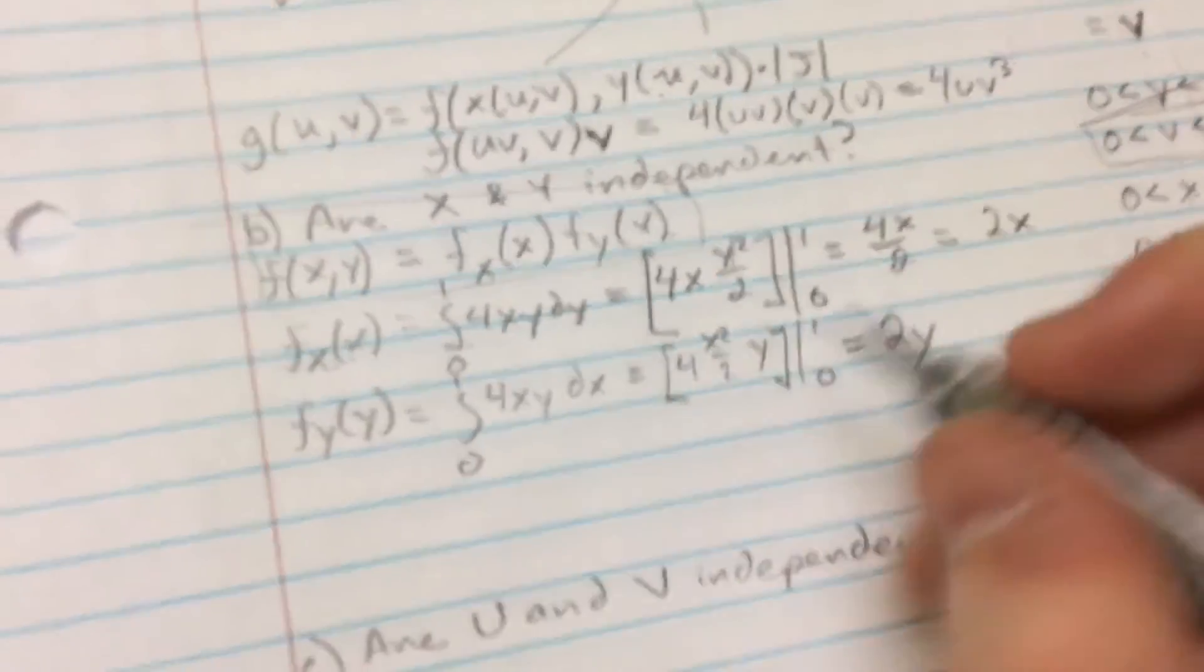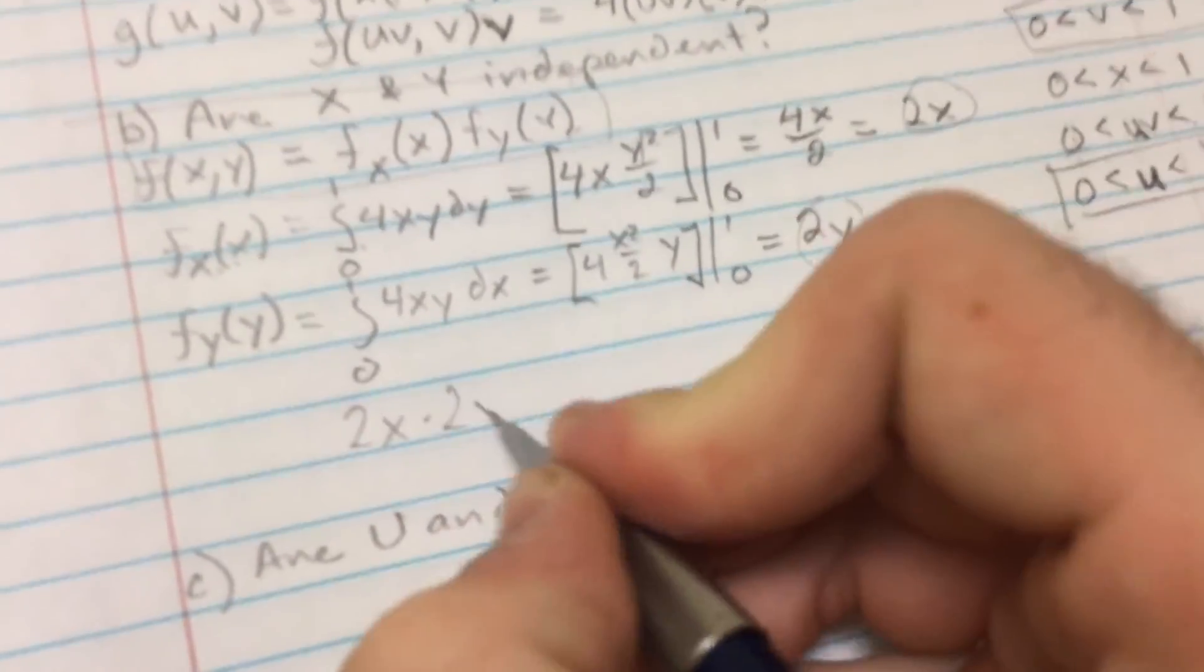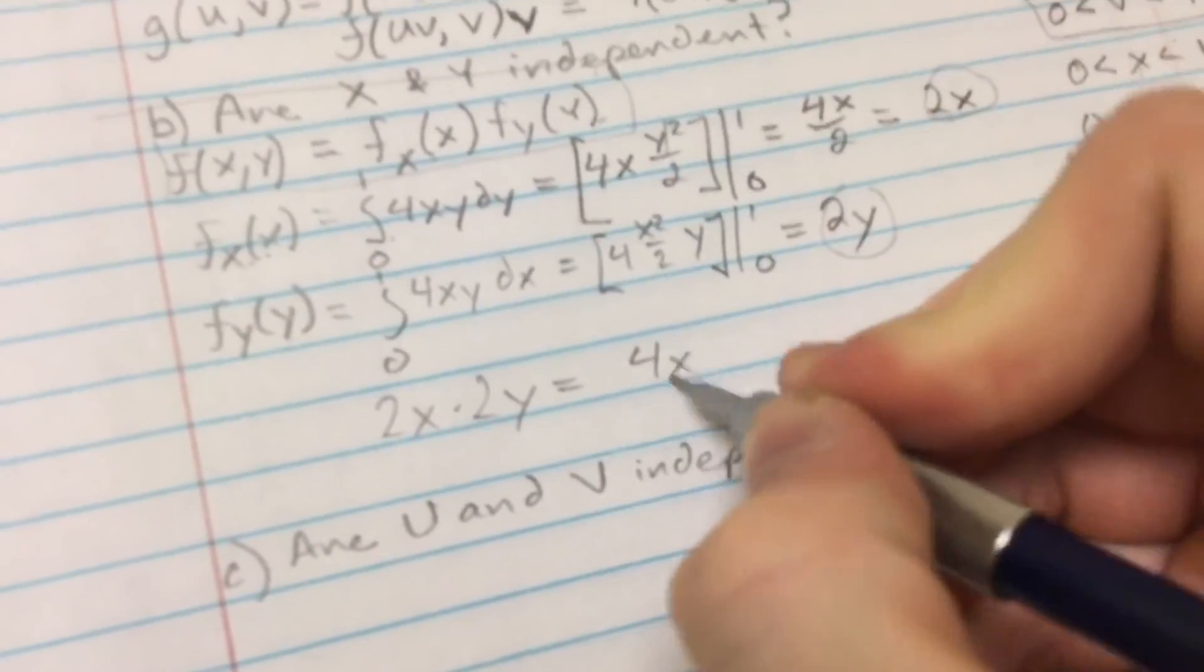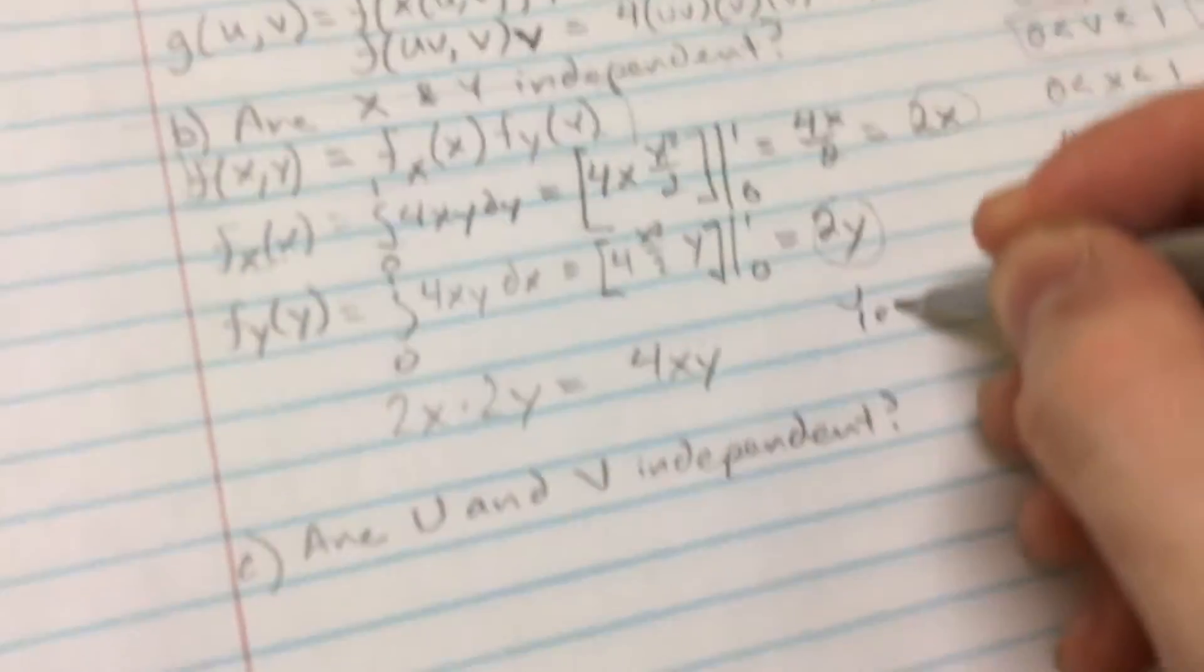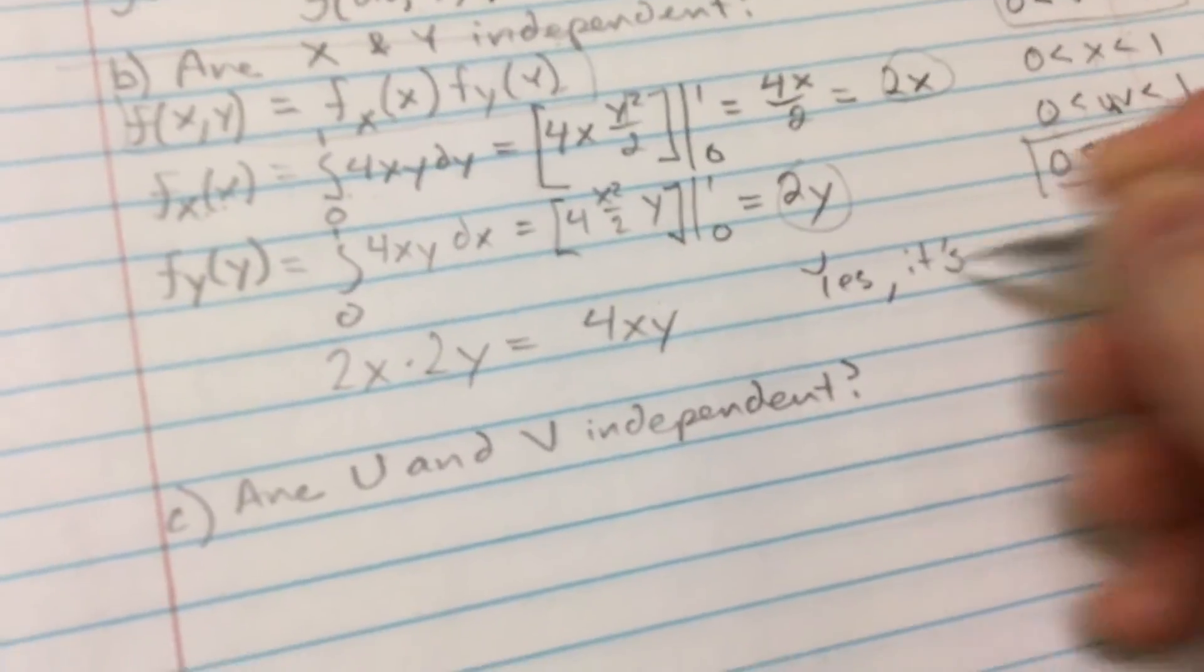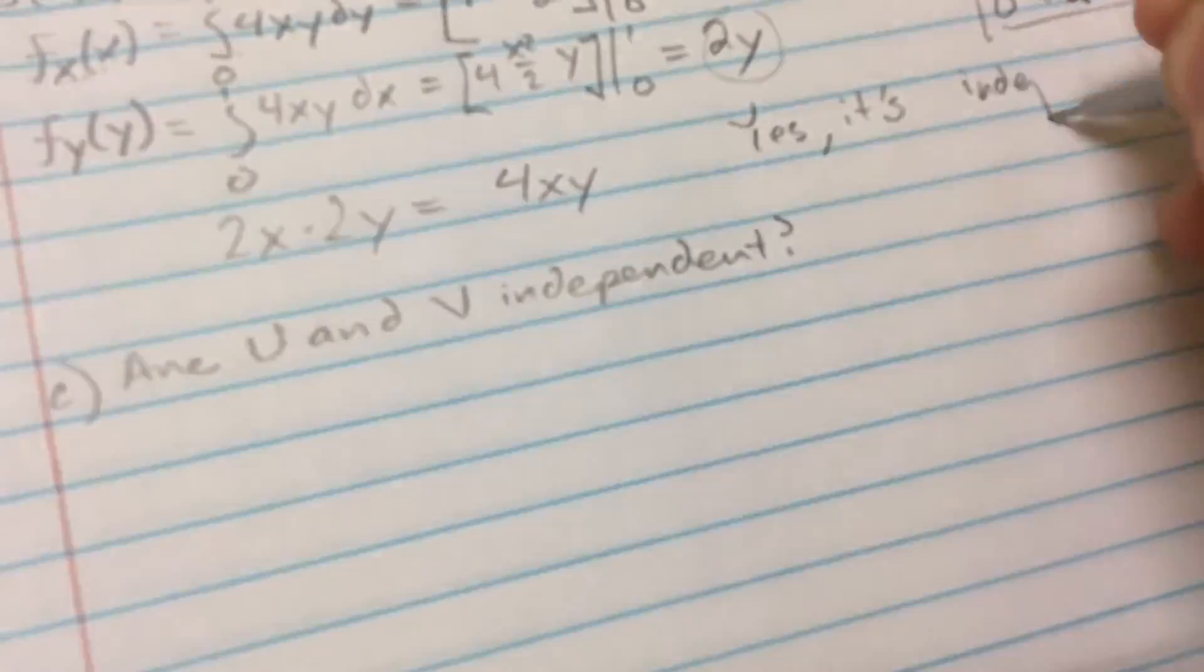And now we want to determine whether or not they're independent. So we just multiply this times that. 2X times 2Y equals 4XY. Does 4XY equal to that? Yep, it is. So yes, it's independent.